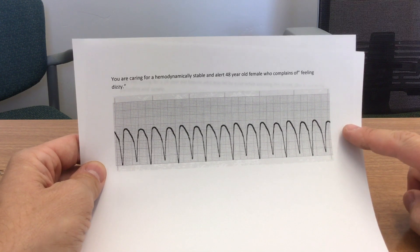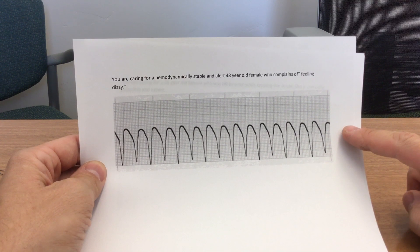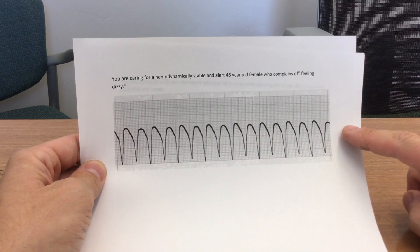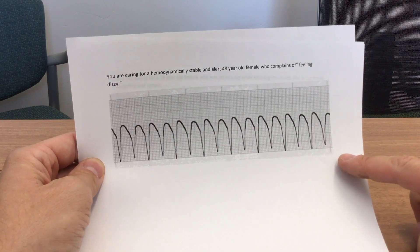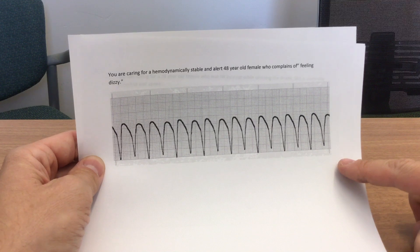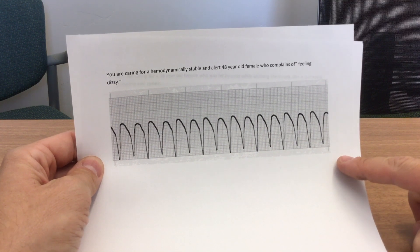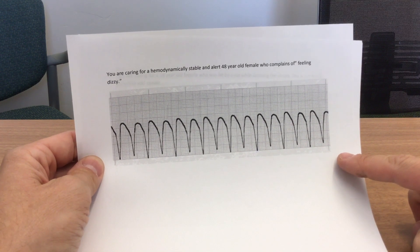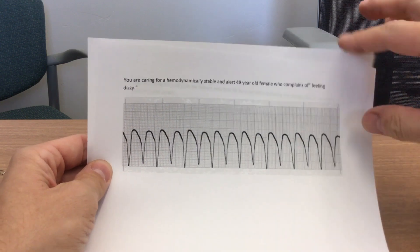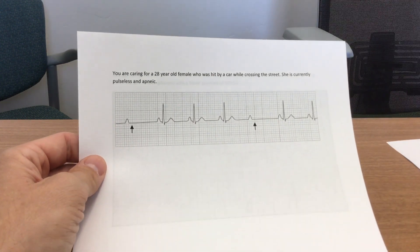So what does everybody get? IV, O2, monitor, H's and T's, transport, reassessment. In addition to that, we would consider vagal maneuvers and administer adenosine to this patient. Moving on to the next one.